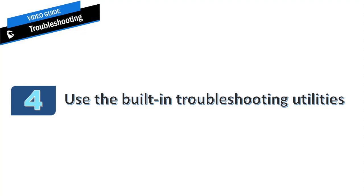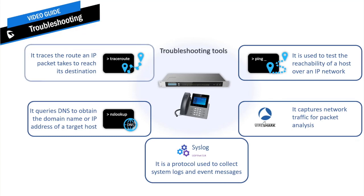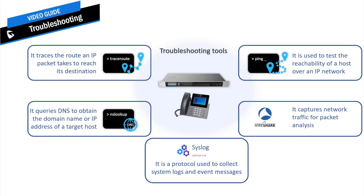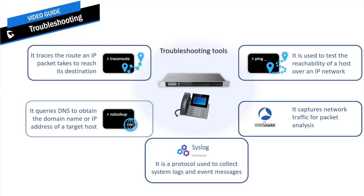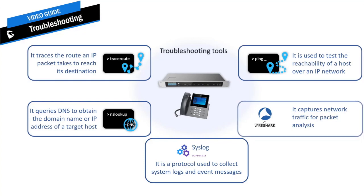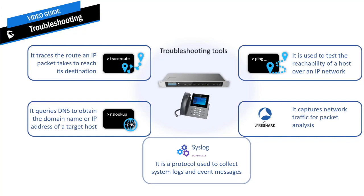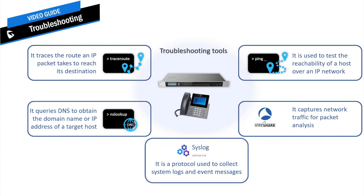Most Grandstream devices come with built-in utilities to help you troubleshoot and diagnose problems. Traceroute is a useful tool to diagnose network connections — it traces the route an IP packet takes to reach its destination and can help determine where a packet fails or gets delayed. Ping is commonly used to test the reachability of a host over an IP network. NSLOOKUP is used to obtain the domain name or IP address of a target host and is typically used when a DNS issue is suspected. There is also a PCAP capture utility readable with Wireshark, used to troubleshoot SIP stack or other communication protocols, and SYSLOG, which collects system logs and event messages.